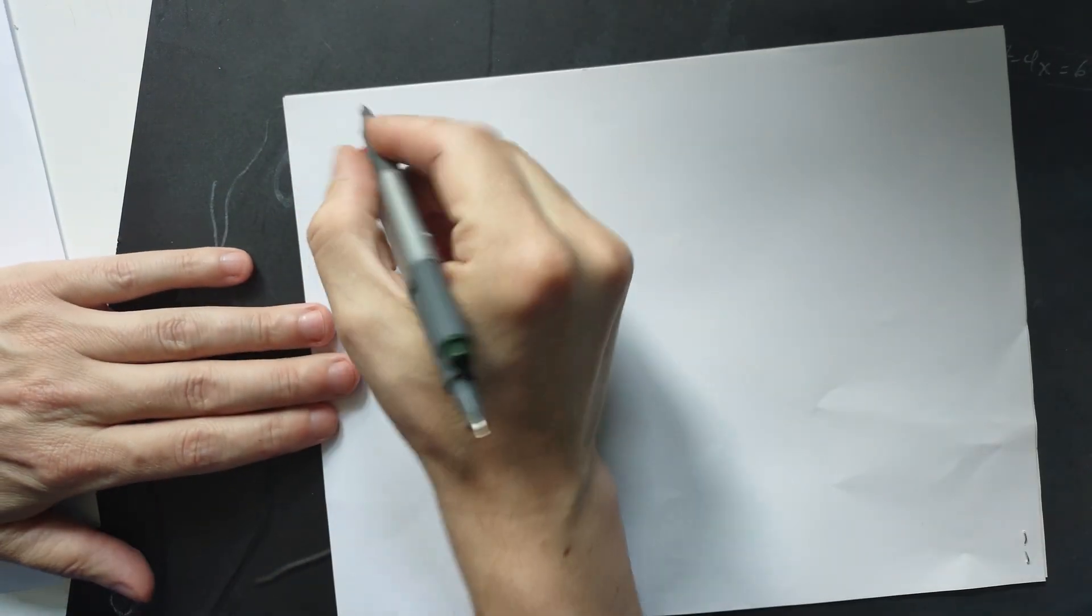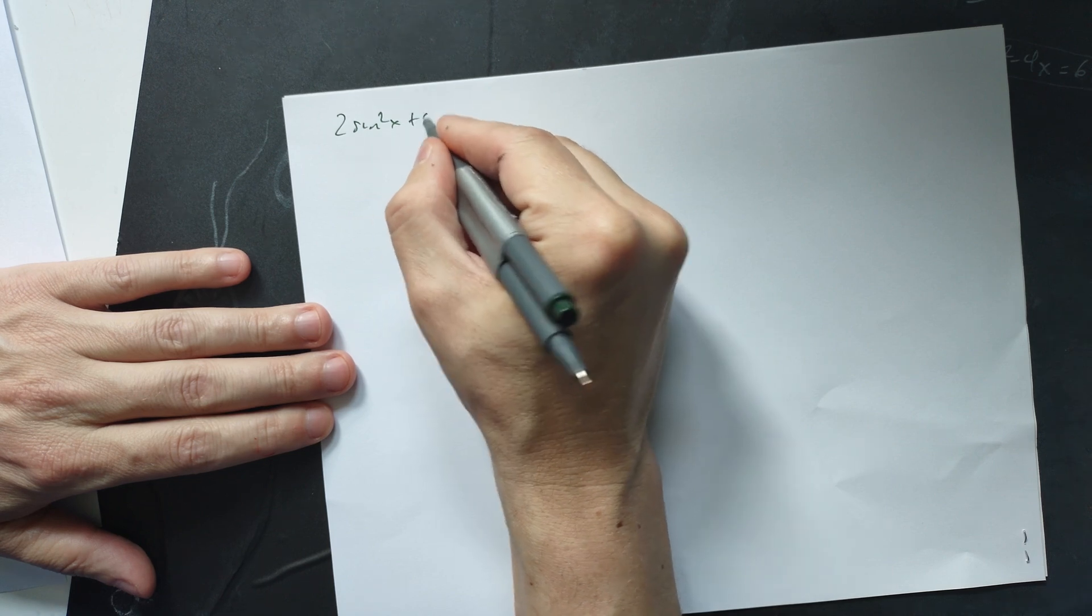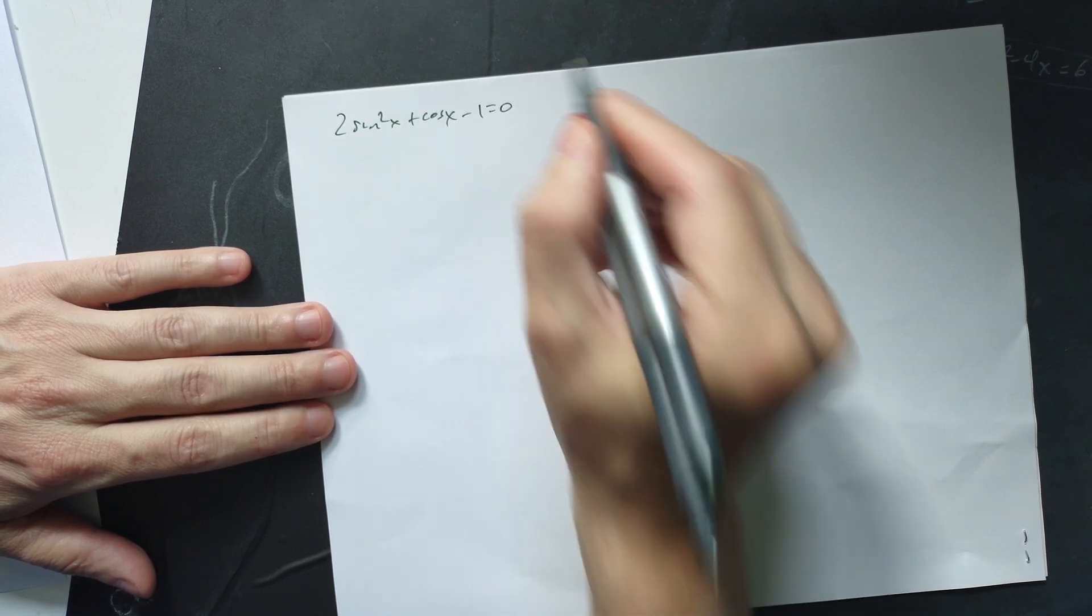Let's solve this equation right here, friends. So 2 sine squared x plus cosine x minus 1 is equal to 0.